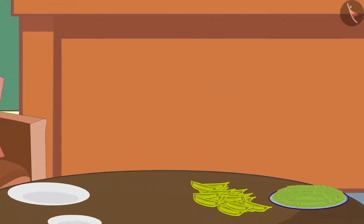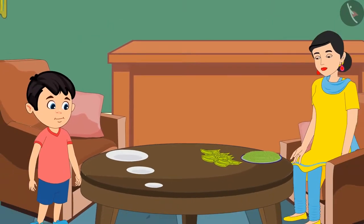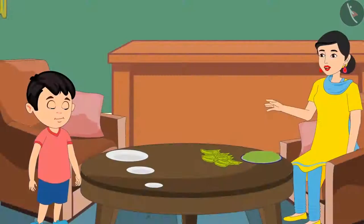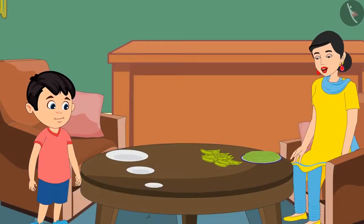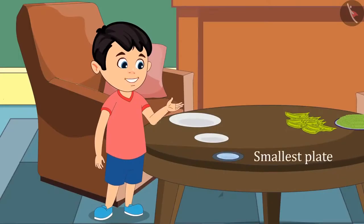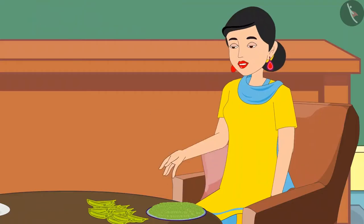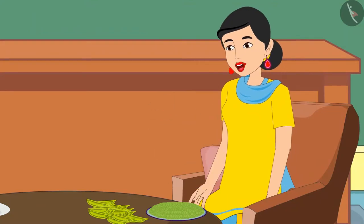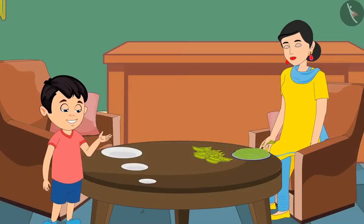Chotu took all three plates to his mother and asked her: Mom, both these plates are smaller than this plate. So which plate should I give you? Chotu, you are right. Both these plates are smaller than this plate. Can you tell me which is the smallest among them? Yes Mom, this plate is the smallest. Isn't it, Mom? Yes, Chotu, you are absolutely right. Now put the other two plates back, please. Okay, Mom.